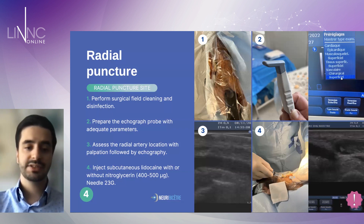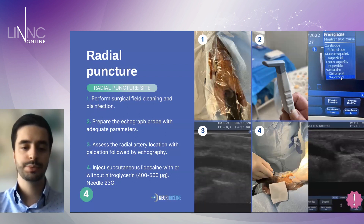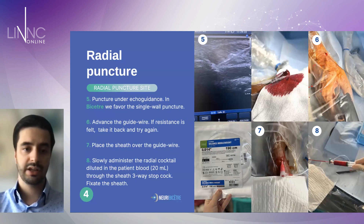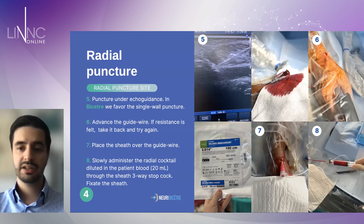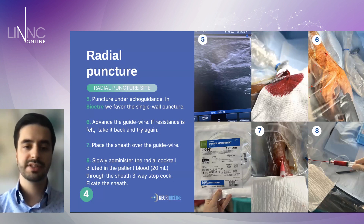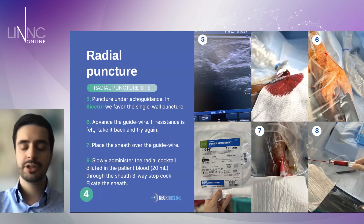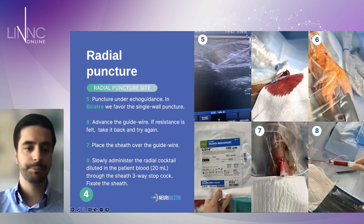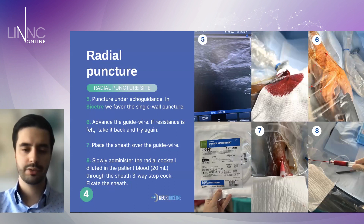After that, you assess the radial artery under echography and palpation, and inject subcutaneous lidocaine with or without nitroglycerin. Puncture is performed under echo-guidance. At Bicêtre, a single wall puncture is normally used to avoid excessive artery trauma. Then you perform the micropuncture with a micropuncture radial-specific system, and place the sheath over the guide wire as you normally would.